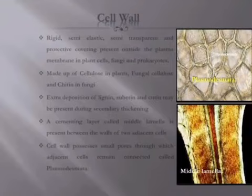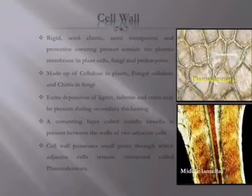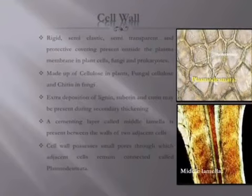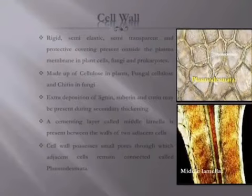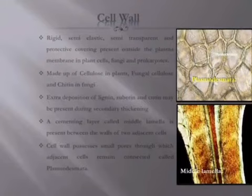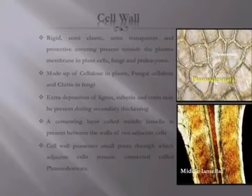If we have two cells, we have a middle lamella — a cementing layer. If we have two cells, we bind them through this middle layer called middle lamella. The cell wall also possesses small pores which allow the two cells to be connected to each other. That is called plasmodesmata.